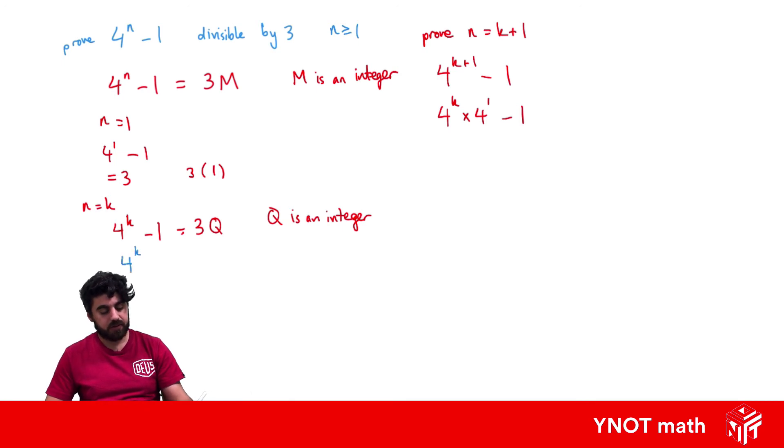So we're just going to add one to both sides. So 4 to the k is going to be 3q plus 1.